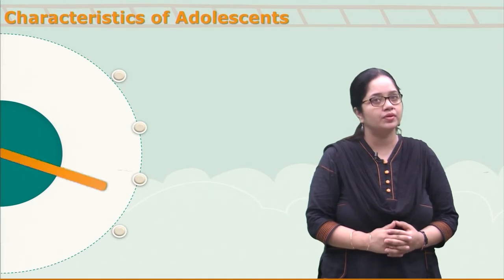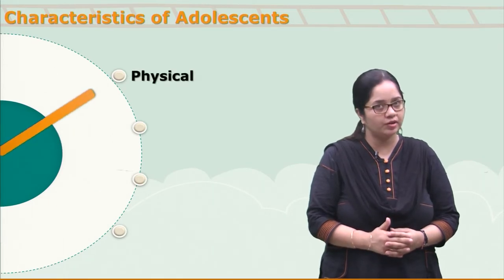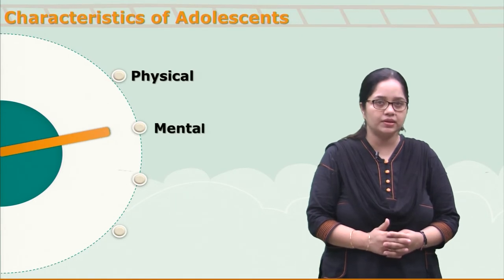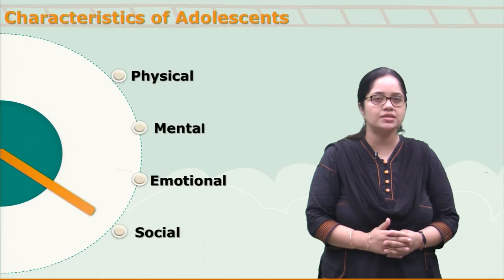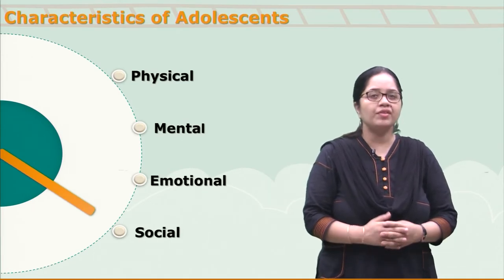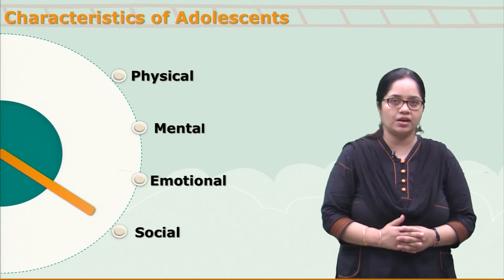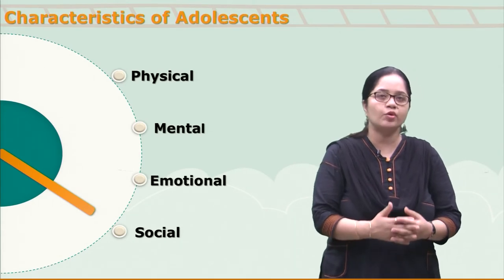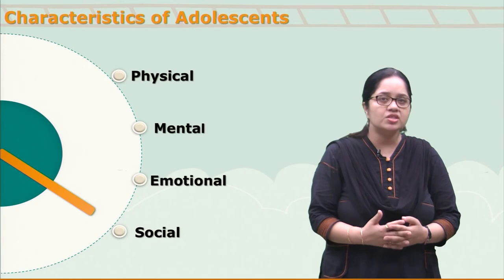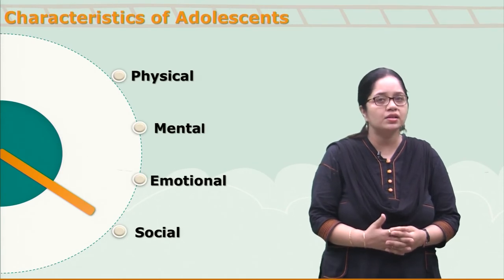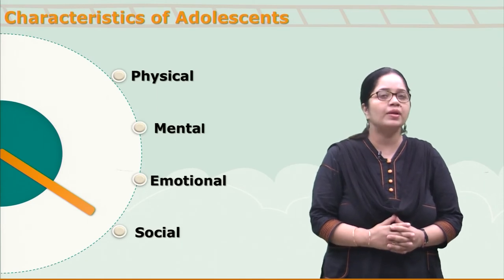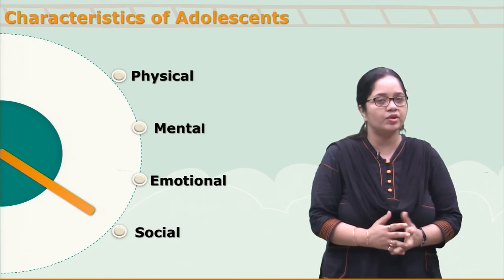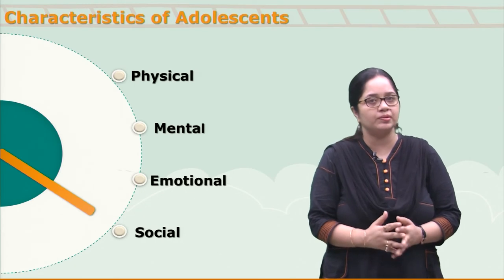Let's see the characteristics of adolescence in terms of physical development, mental development, emotional development, and social development. These four areas vary from person to person — genetics, health, nutrition, and even your socioeconomic status play a significant role, so it will be different for different people.